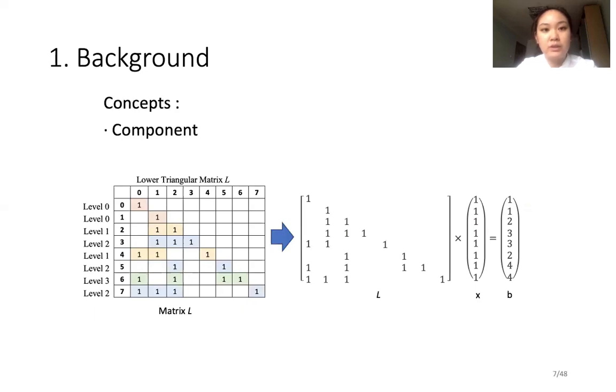I will introduce the basic concepts that are essential for understanding sparse triangular solve. For the equation set LX equals B, we provide the following concepts. Component is an element in solution vector X, such as X0. Element is a non-zero element in matrix L, such as L00. Dependency: if the solution of component Xi needs the value of component Xj, Xi has a dependency on Xj. For example, due to the element L21, the component X2 needs the value of component X1, so X2 has a dependency on X1. Level is a solution order according to dependency among components. The components at the same level form a level set.